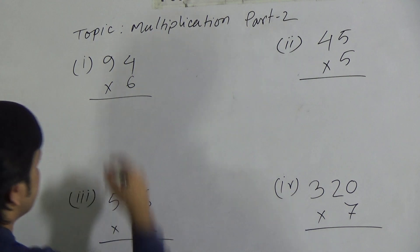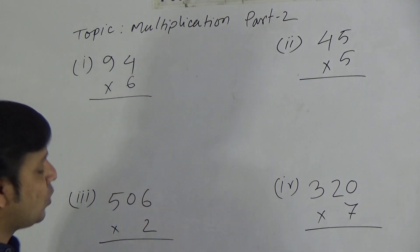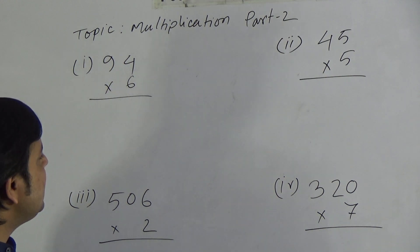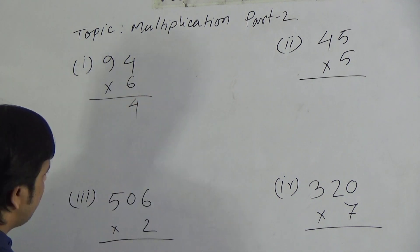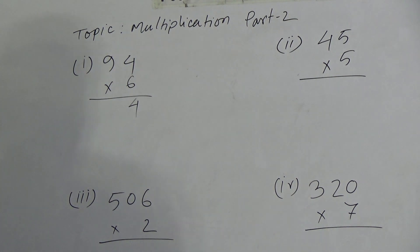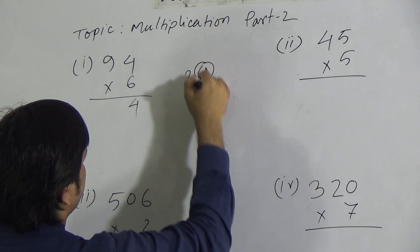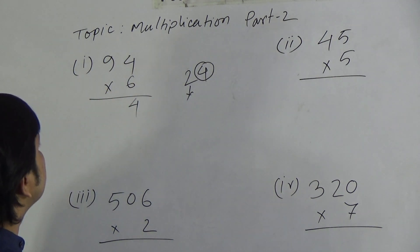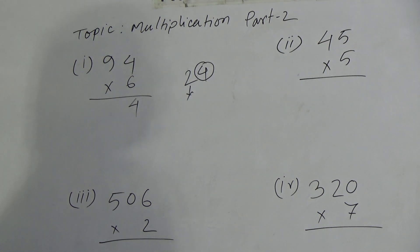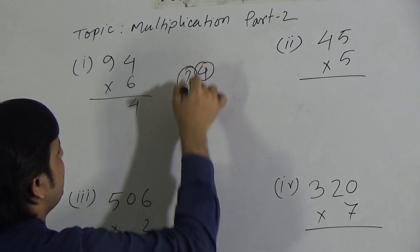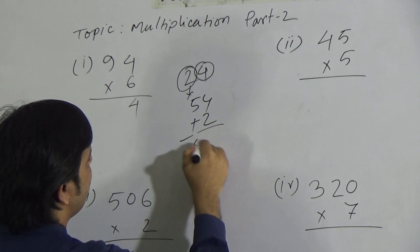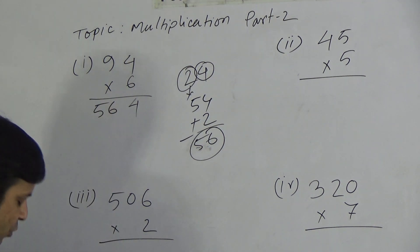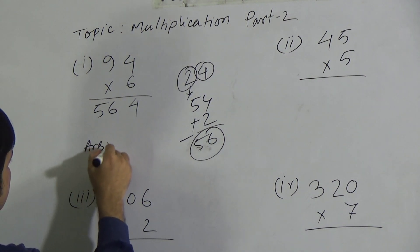We have to say the times table of 6 up to 4. You know: 6 0's are 0, 6 1's are 6, 6 2's are 12, 6 3's are 18, 6 4's are 24. So we write 4 from the 24, and carry 2. Now say the times table of 6 up to 9: 6 9's are 54, plus carrying 2 gives 56. As there is no digit after 9, we write 56 here. So the answer of the first question is 564.